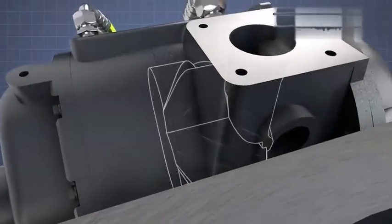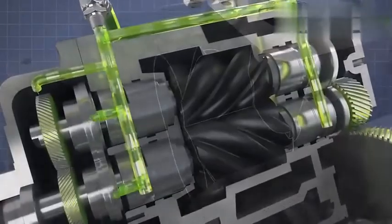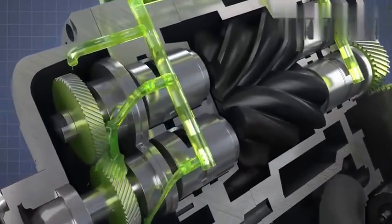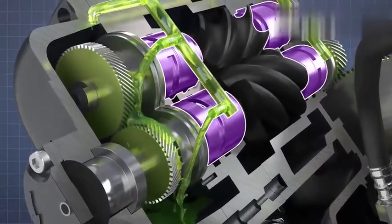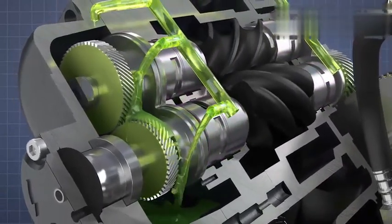Oil never enters the compression chambers but is used to keep gears and bearings lubricated and cool. Special seals between the rotors and bearings prevent air passing into the oil system and oil passing into the compression chambers.